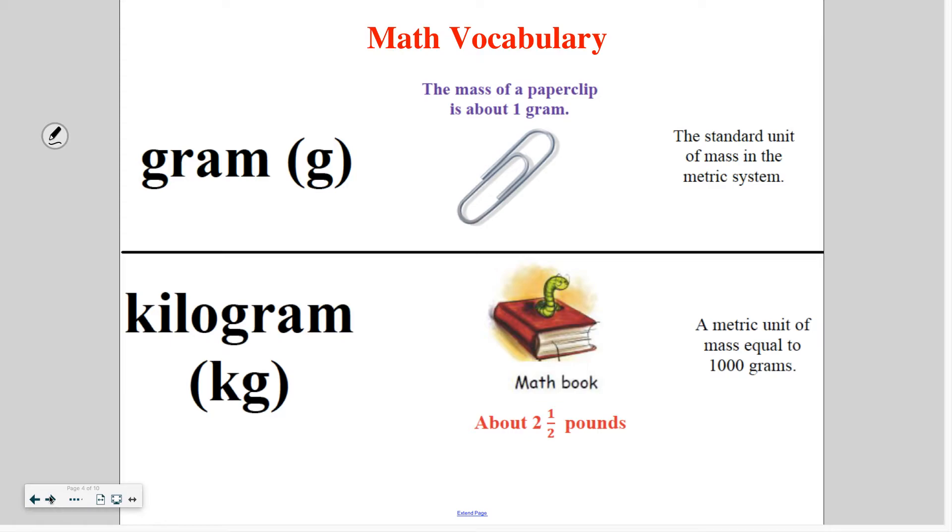A gram is a standard unit of mass in the metric system. And this is what I would call a benchmark. The mass in the paperclip is about one gram. So I can use the fact that a paperclip weighs one gram to estimate the potential mass of another object.